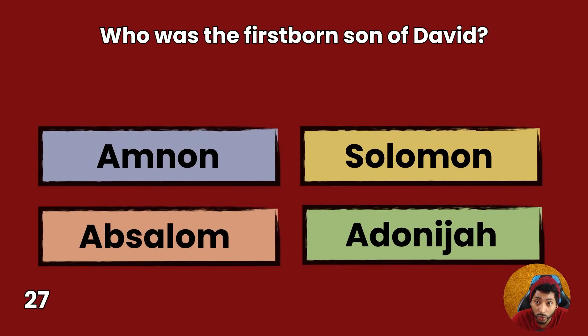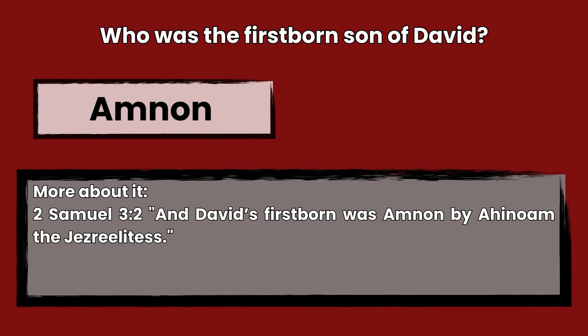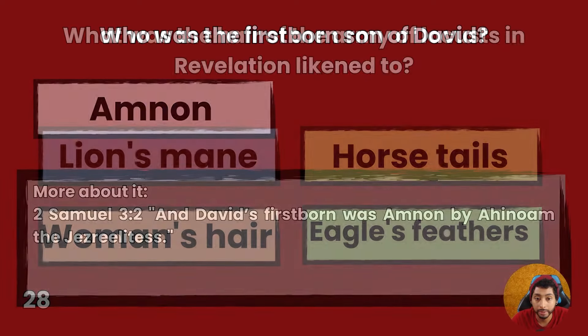Question 27: Who was the firstborn son of David? Amnon, Solomon, Absalom, or Adonijah? Answer: Amnon. 2 Samuel 3:2 — And David's firstborn was Amnon by Ahinoam the Jezreelites.